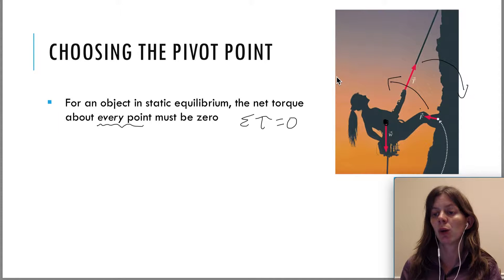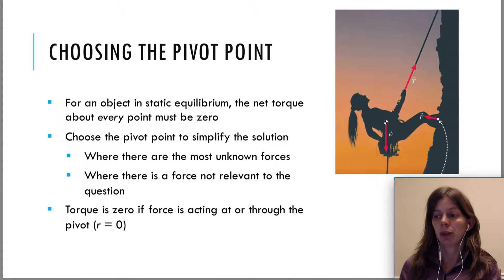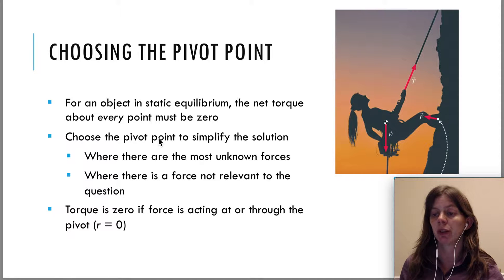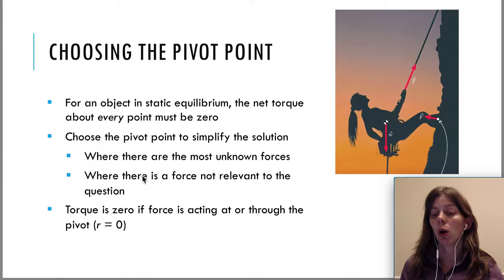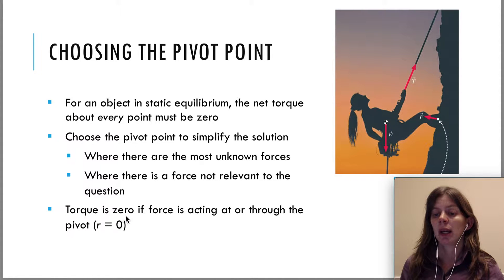So how do you know where to pick your pivot point if you can pick it anywhere? The idea is that you're going to choose the pivot point to simplify the solution. You're going to pick it where there are the most unknown forces, or where there is a force not relevant to the question. The reason is that the torque is zero if the force is acting at or through the pivot point.